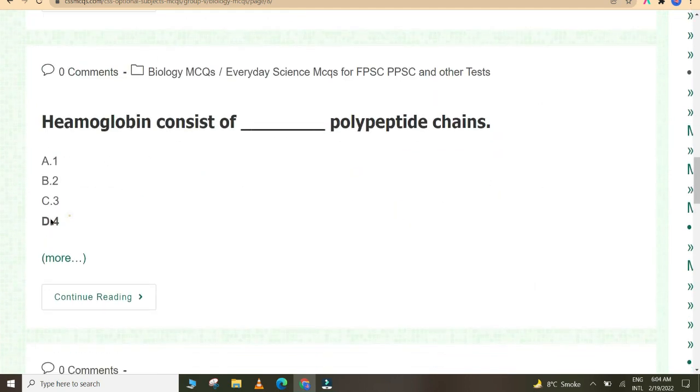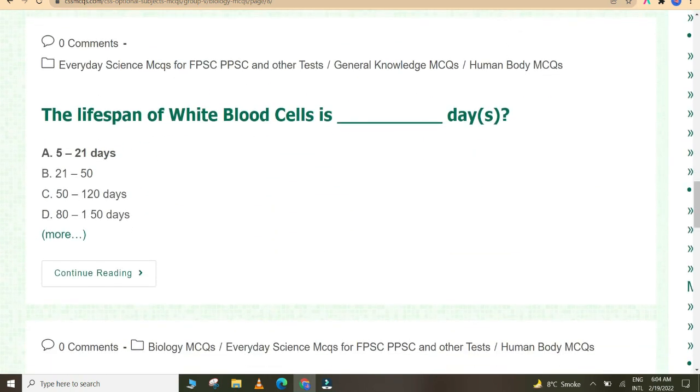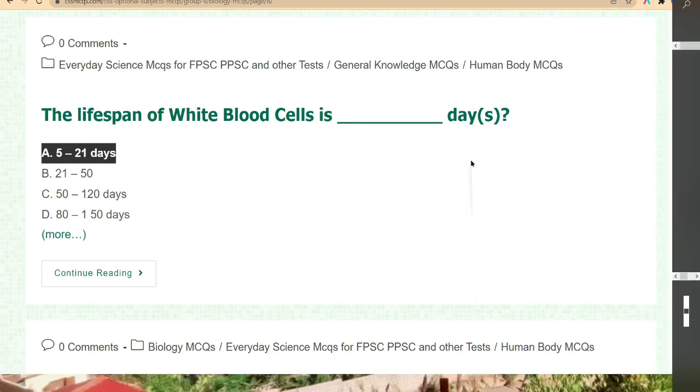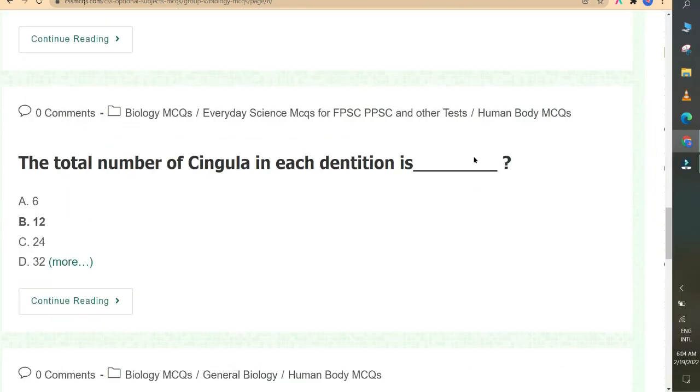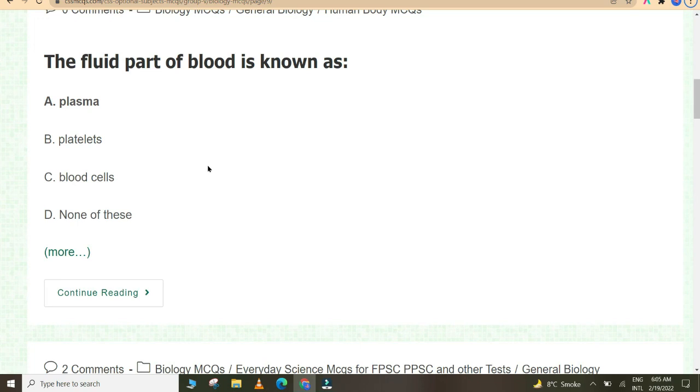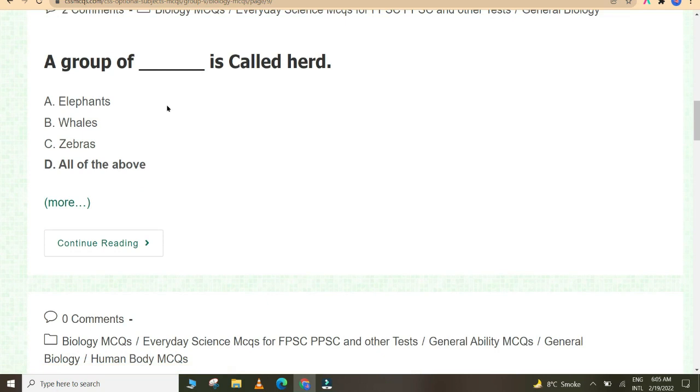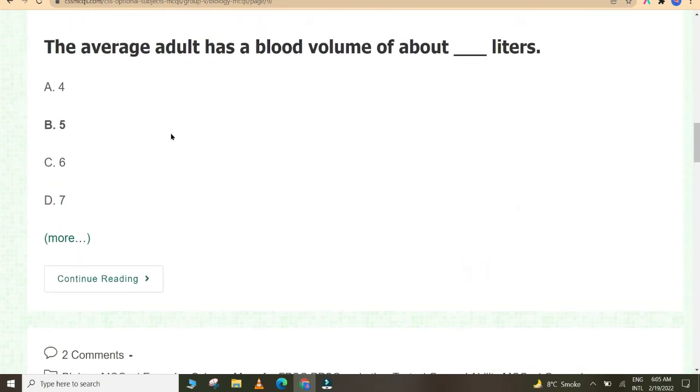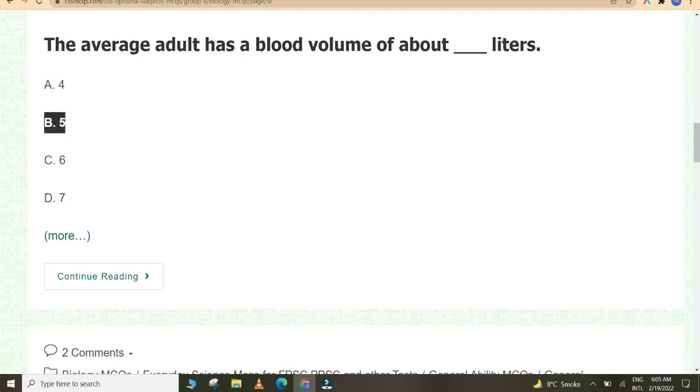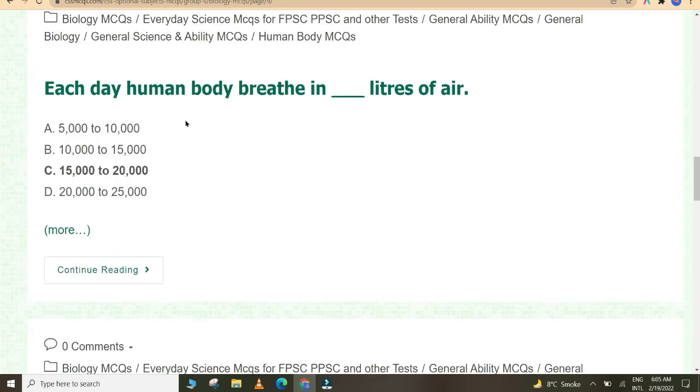The distribution of air into lungs is controlled by bronchioles. Which can respond to changes in their environment? Both living organisms and non-living organisms. Hemoglobin consists of four polypeptide chains. The lifespan of white blood cells is 5 to 21 days. The total number of incisors in each dentition is 12. The fluid part of blood is known as plasma.